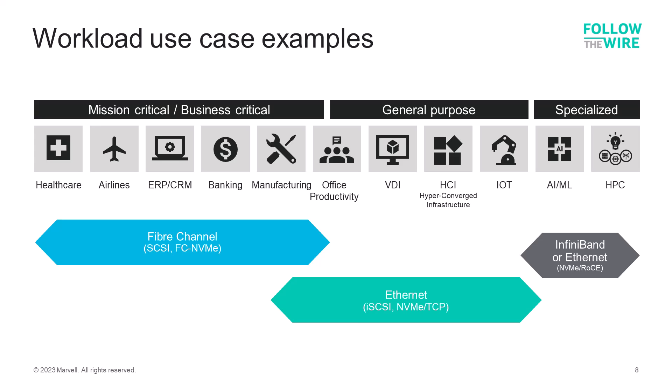Here's a look at how to consider making a choice of protocols based on customer use cases and applications. Use cases like healthcare, banking and finance, ERP or CRM systems, or transportation applications are all mission-critical applications best suited for the high reliability and security of Fiber Channel. General purpose applications like Office Productivity, Virtual Desktop, or HCI are use cases for Ethernet because they typically use a combination of block, file, and object storage. For specialized use cases like artificial intelligence, machine learning, and high-performance computing, using InfiniBand or Ethernet with NVMe over RoCE or other low-latency protocols may be the best choice.